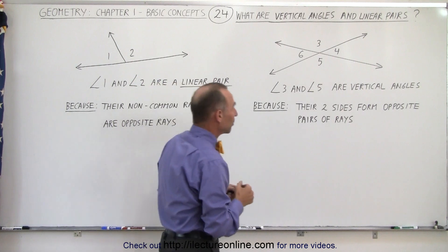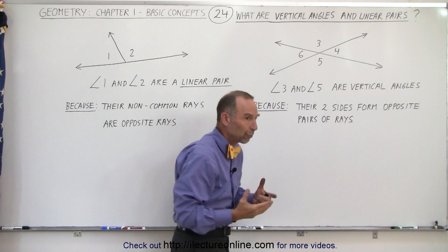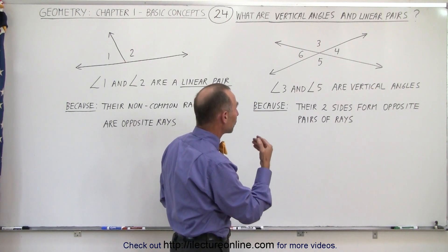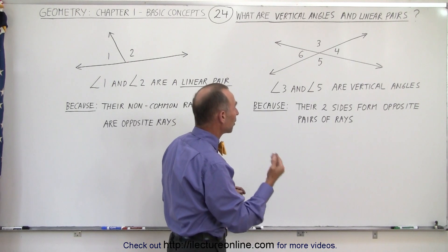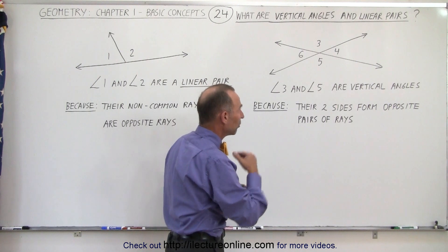When we look at this here, we can see that we have two lines that intersect one another and therefore we have what we could call four rays. Now we have angles 3 and 5 and we have angles 4 and 6. Angles 3 and 5 are vertical angles, and so are 4 and 6.